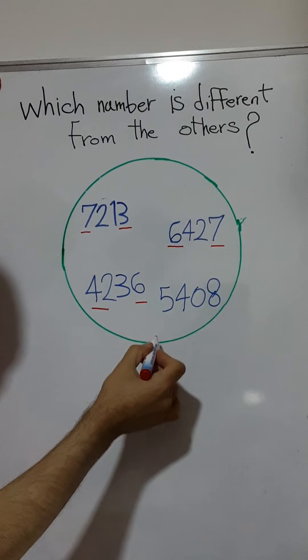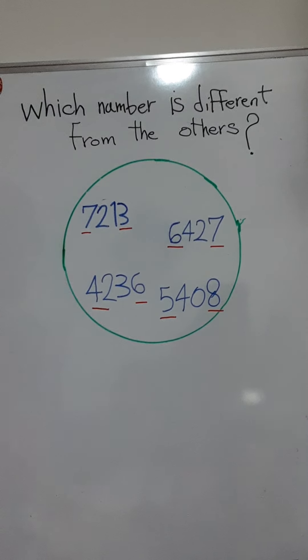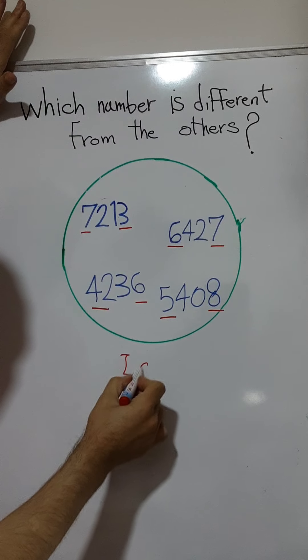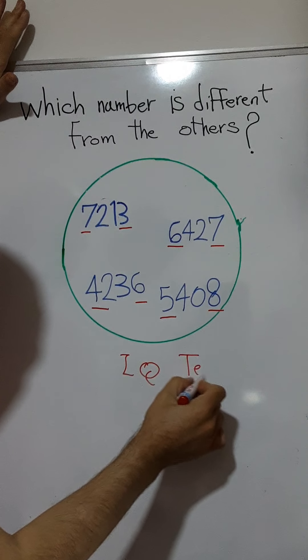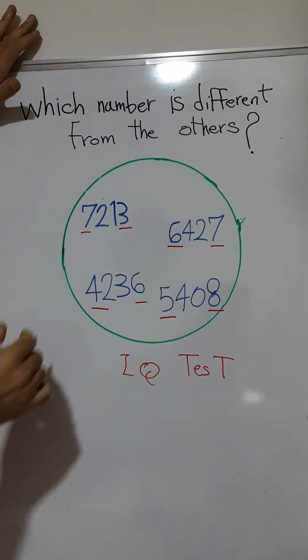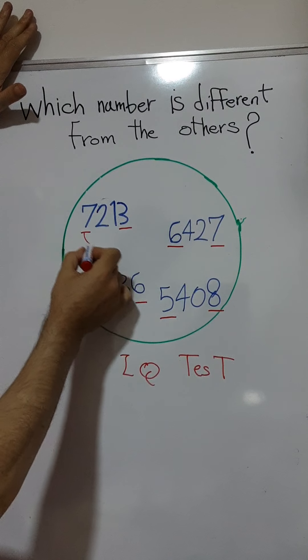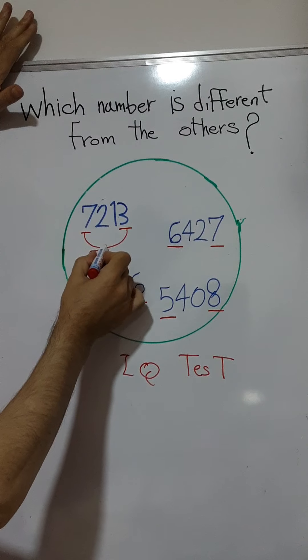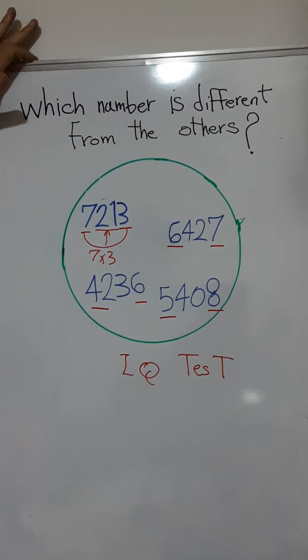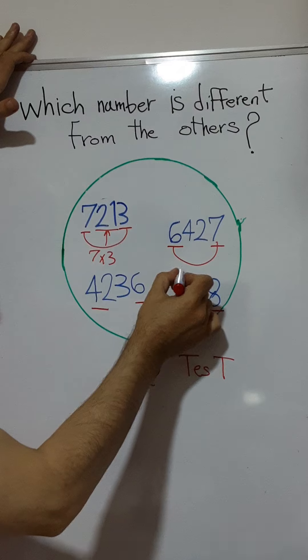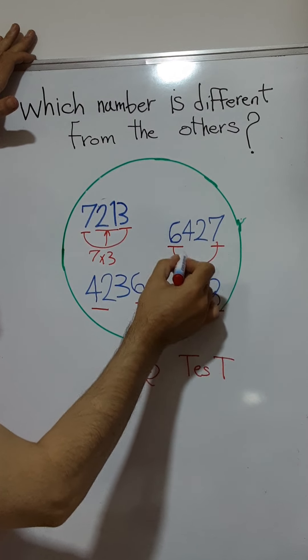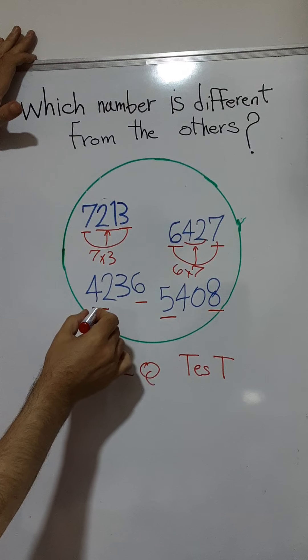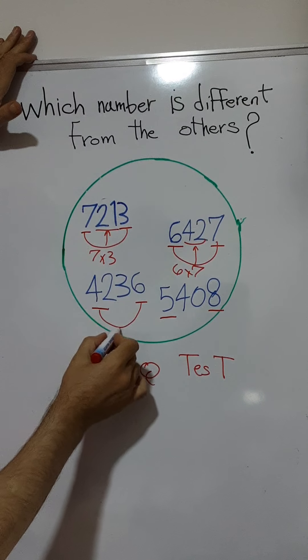This is an IQ test, really IQ test. So you see here seven times three equals 21. Six times seven equals 42. And what about this? Four times six equals...